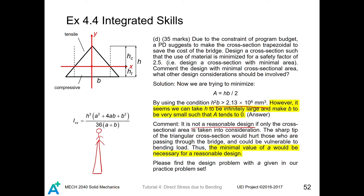The sharp tip of such a triangular cross-section would be immediately dangerous to someone crossing the bridge. Furthermore, there could be lateral loads from friction that would compromise the strength in other directions. Therefore, a minimum value of A (the upper base width) would be necessary for a reasonable design. In the practice problem set, there is a modified version of this problem with a given value of A for you to try.